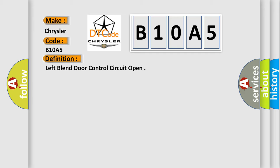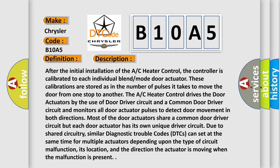After the initial installation of the AC heater control, the controller is calibrated to each individual blend mode door actuator. These calibrations are stored as the number of pulses it takes to move the door from one stop to another. The AC heater control drives the door actuators by use of a door driver circuit and a common door driver circuit, and monitors all door actuator pulses to detect door movement in both directions. Most door actuators share a common door driver circuit, but each door actuator has its own unique driver circuit. Similar diagnostic trouble codes (DTCs) can set at the same time for multiple actuators depending upon the type of circuit malfunction, its location, and the direction the actuator is moving when the malfunction is present.